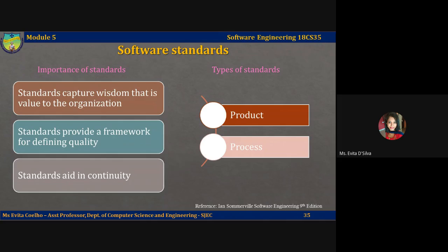Second, standards provide a framework for defining what quality means in a particular setting. Software quality is subjective, and by using standards you establish a basis for deciding if a required level of quality has been achieved. Of course, this depends on setting standards that reflect user expectations for software dependability, usability, and performance.